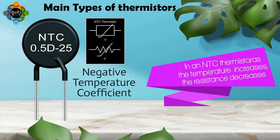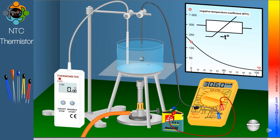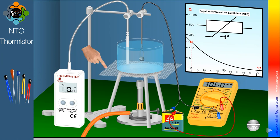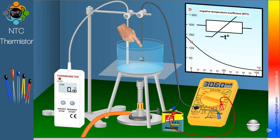Let's start with the negative temperature coefficient, or NTC thermistor. In an NTC thermistor, as the temperature increases, the resistance decreases. Imagine a virtual experiment where we have an NTC thermistor connected to a 4.5 volt battery. We also have a digital thermometer, wire gauze, a tripod stand, a container with water, and an iron stand.